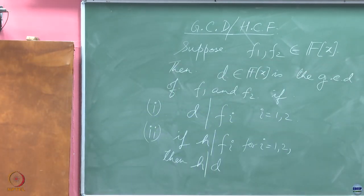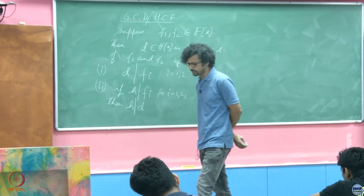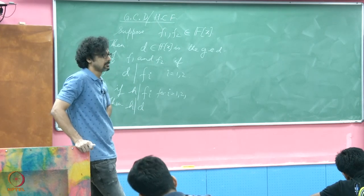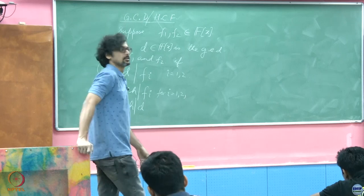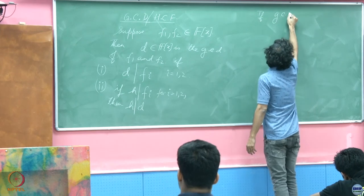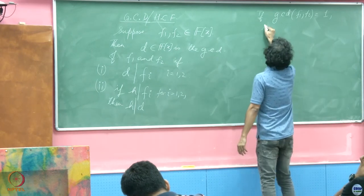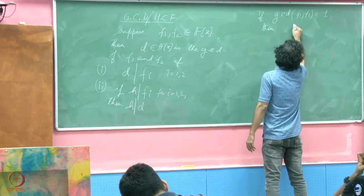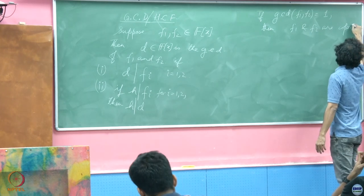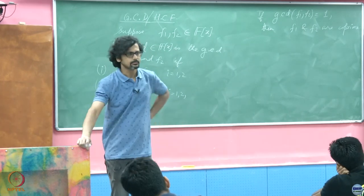Why are we interested in this? Because it turns out that if the GCD of two polynomials — much like numbers — happens to be unity, then we call such polynomials co-prime. So, if GCD(F1, F2) is equal to 1, then F1 and F2 are co-prime.